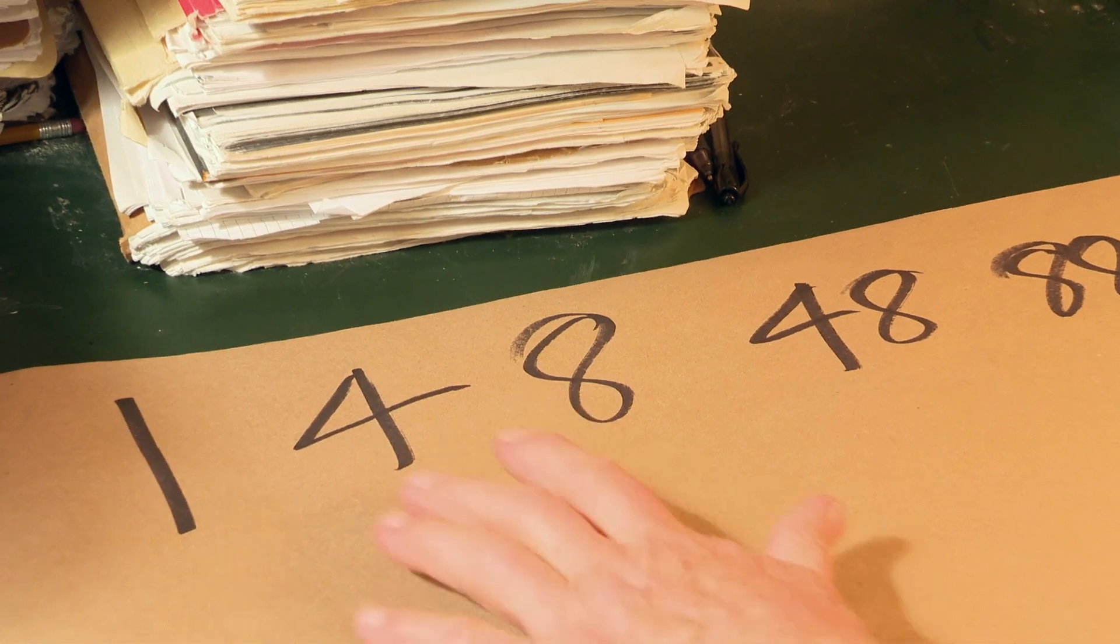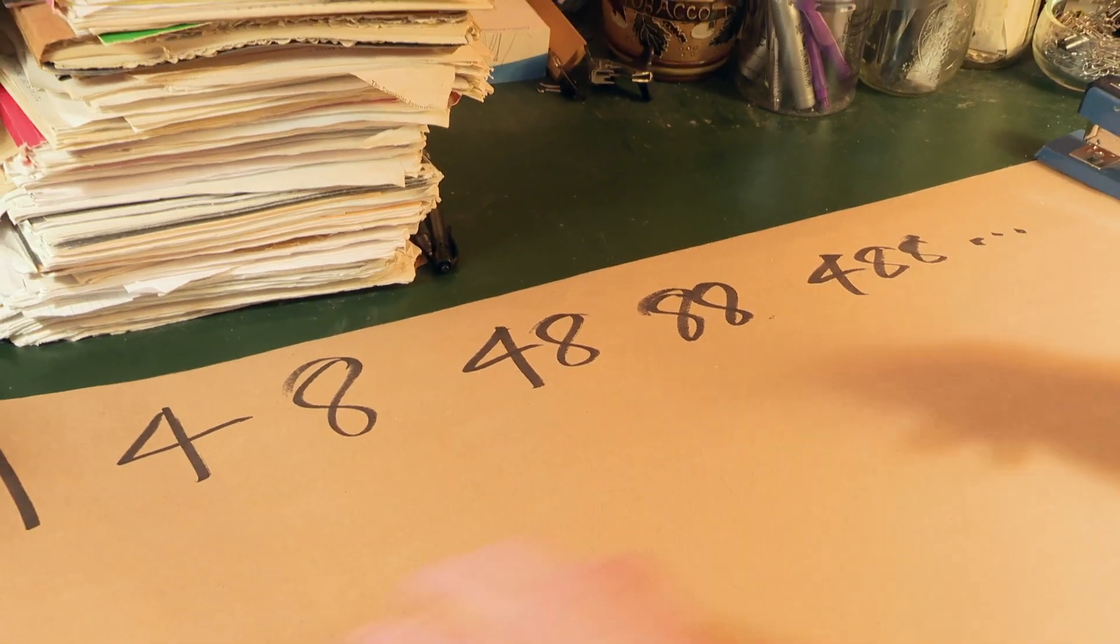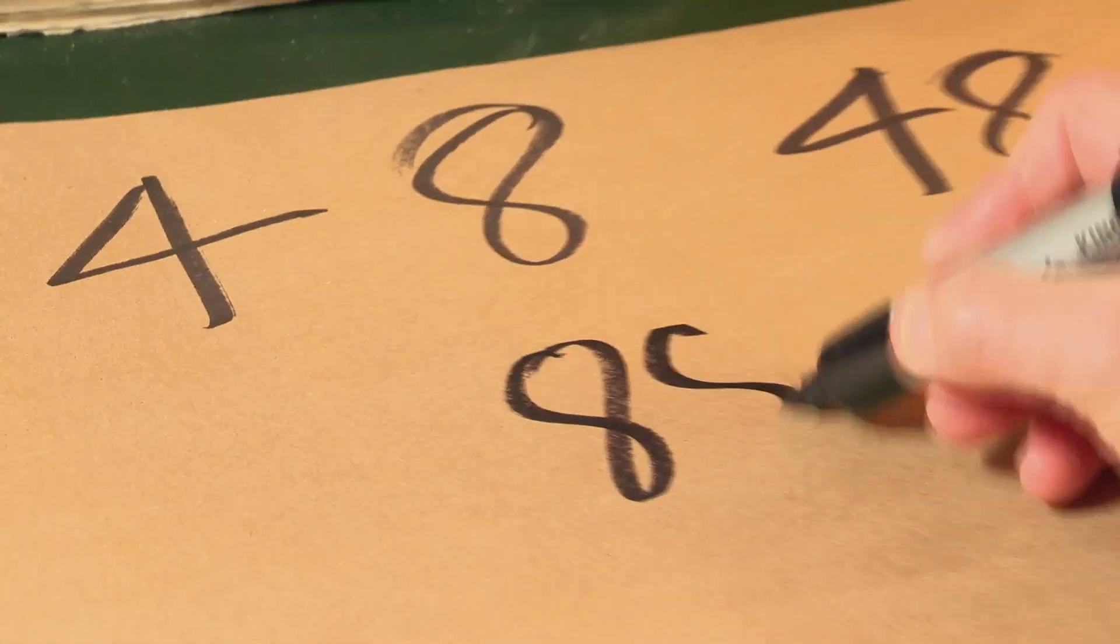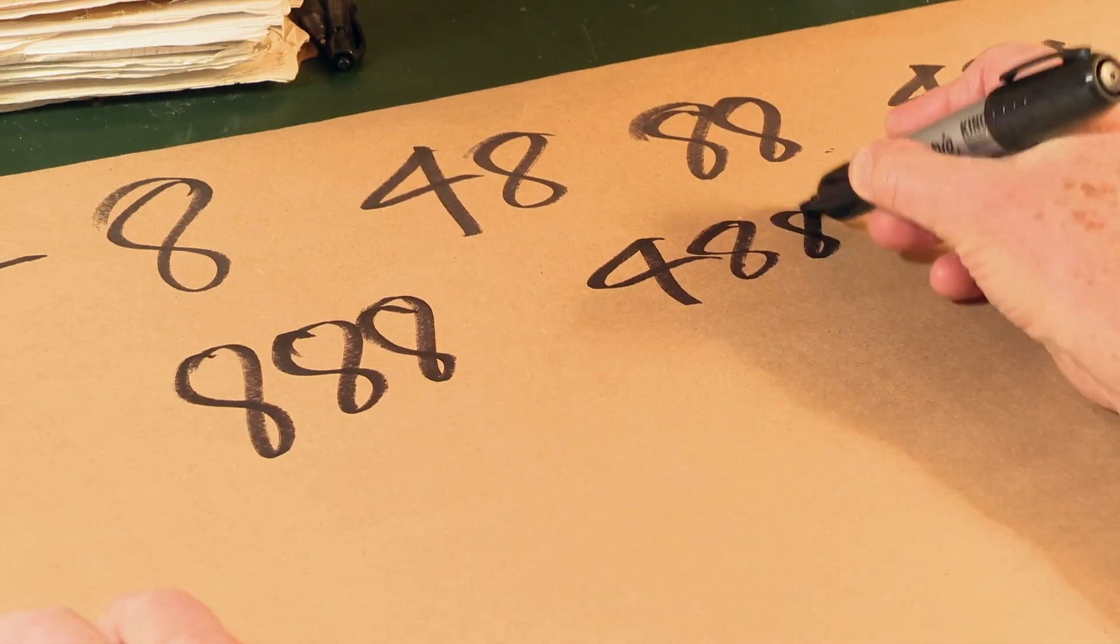Well, 1 is a little strange. 4, 8, 48, 88, 4, 8, 8, and obviously the next one is going to be 888, and then 4888.